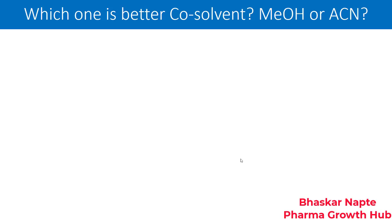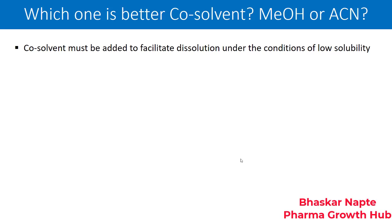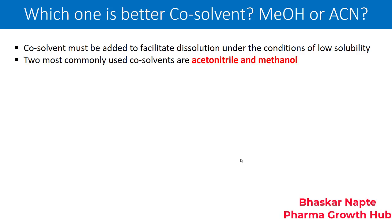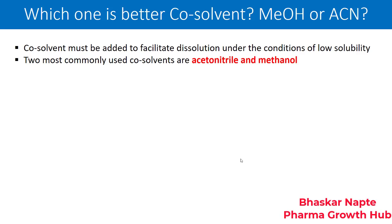If you look at industrial practices, people often use either methanol or acetonitrile as the co-solvent — but are they really good co-solvents? We will discuss this and then come to a conclusion about which solvents are preferred at various pH ranges. The co-solvent must be added to facilitate dissolution under conditions of low solubility. The two most commonly used co-solvents are ACN and methanol.